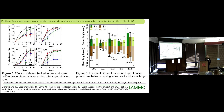We also checked spent coffee ground leachate because we later tried to pelletize the biofuel ash together with it. After the germination test, we measured the spring wheat root and shoot length. We saw that seedlings germinated in the extract with biofuel ash taken from the electrostatic filter had the shortest root and shoot lengths.